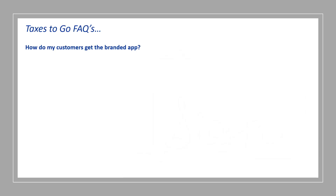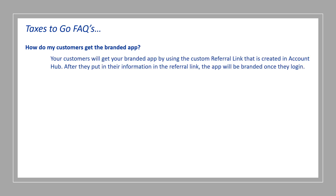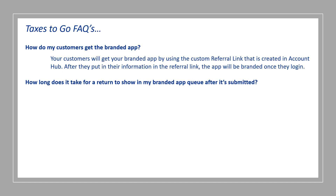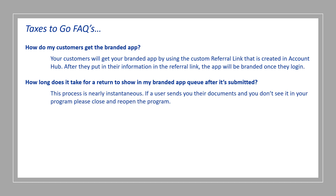And now a few Taxes to Go frequently asked questions. How do my customers get the branded app? Your customers will get your branded app by using the custom referral link that's created in Account Hub. After they put in their information in the referral link, the app will be branded once they log in. How long does it take for a return to show in my branded app queue after it's submitted? This process is nearly instantaneous. If a user sends you their documents and you don't see them in your program, please close and reopen the program.